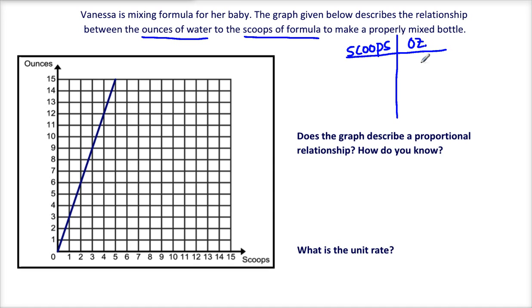Let's get a couple of values. Some points that I can see pretty easily—we have this point right here, which is (2, 6). That represents 2 scoops and 6 ounces. So 2 scoops of formula combines with 6 ounces.